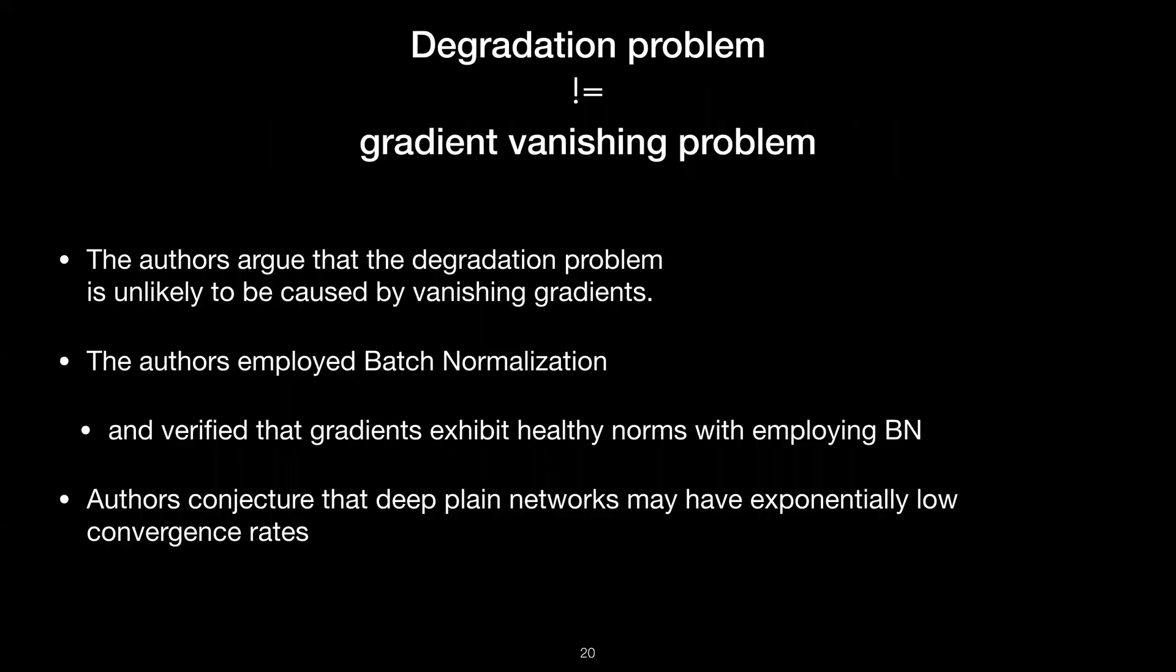Another common misconception about ResNet is that it solves gradient vanishing problem. However, the author argues that the degradation problem is unlikely to be caused by vanishing gradients, which means the degradation problem is not the same as the gradient vanishing problem. This is because the authors employed batch normalization, which is known to solve the gradient vanishing problem, and they explicitly verified that the gradients exhibit a healthy norm. So the authors conjectured that the plain networks may have exponentially low convergence rates.